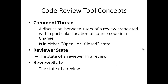A common thread is a discussion thread among participating users of a review. It is associated with a particular source code location and is either in an open or closed state. Common threads are created by reviewers to identify issues in the source code as part of the review. Reviewer state is the state of a reviewer in a review, and review state is the overall state of a review.